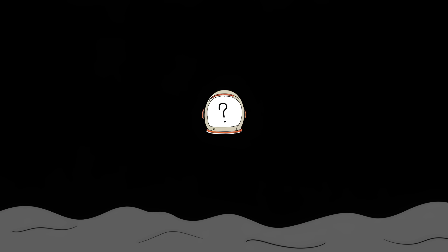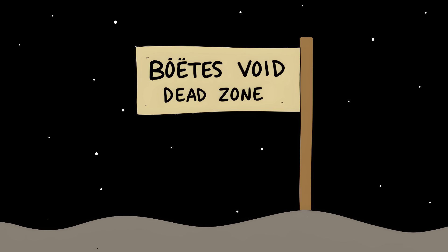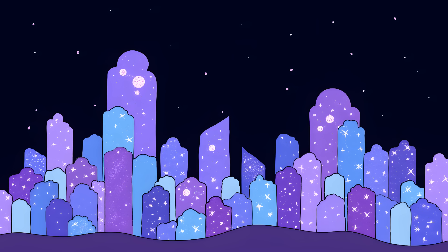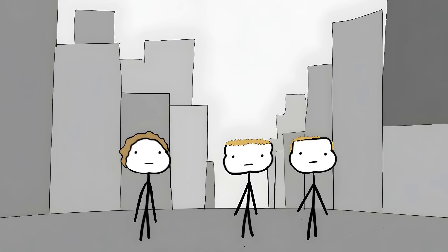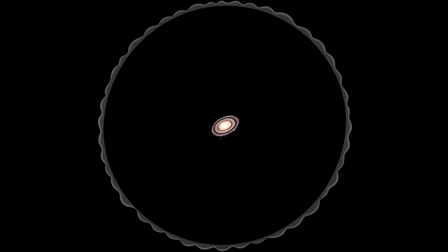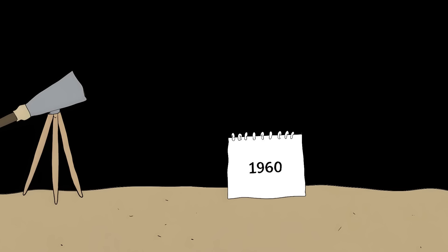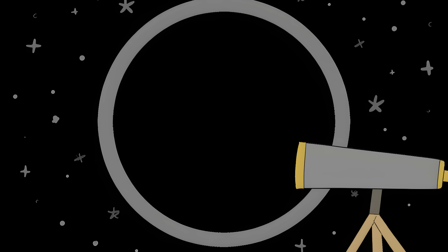Number two: the Boötes void. There's a place in space that shouldn't exist. It's called the Boötes void, a cosmic dead zone 330 million light years across. In normal space, galaxies cluster together like cities on Earth, but in the Boötes void there's just nothing. Scientists found only 60 galaxies in there—that's like walking into Times Square and finding only three people. Our entire Milky Way galaxy could fit into this void billions of times over. If Earth was in the center of it, we wouldn't have known other galaxies existed until the 1960s. Our strongest telescopes would have shown nothing but darkness in every direction.